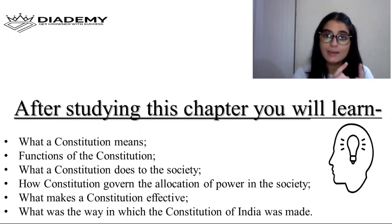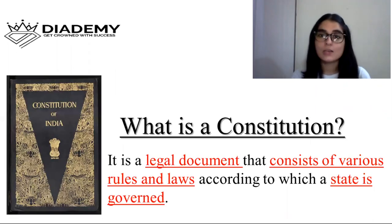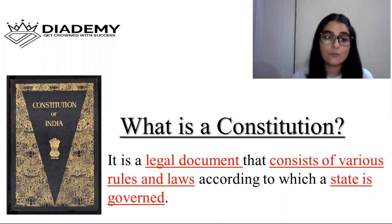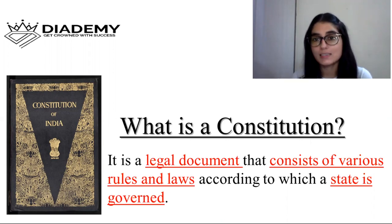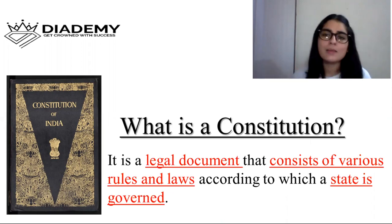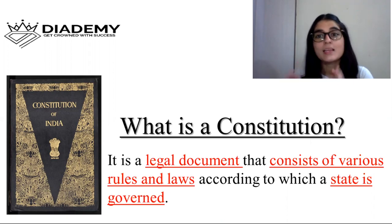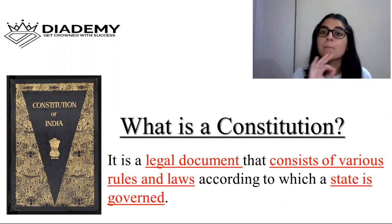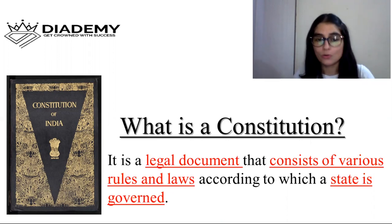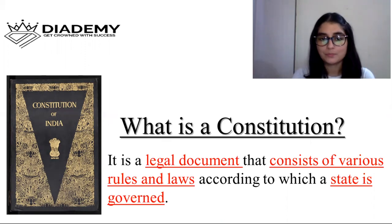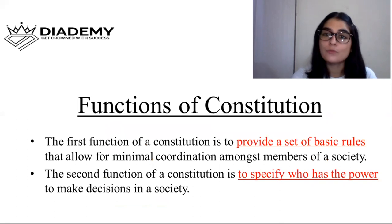So what is a Constitution? It is a legal document that consists of various rules and laws according to which a state is governed. In very basic language, a Constitution is a book in which all the basic rules and laws are written, and according to those rules and laws the state is governed.